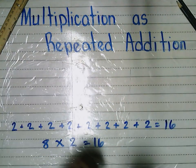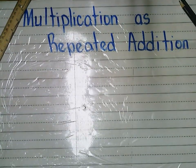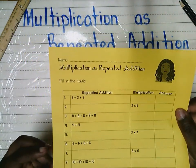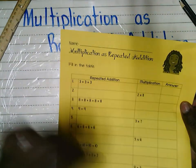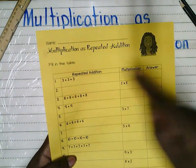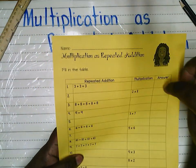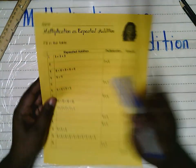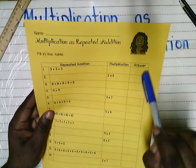Let's practice a worksheet now. On this worksheet, we are going to fill in a table. The table has one column for repeated addition, a second column for multiplication, and a last column for the answer. Notice I didn't write product or sum — because the answer will be the same for both. In the first row, I have three plus three plus three as the repeated addition, and I have to write the multiplication and then the answer.